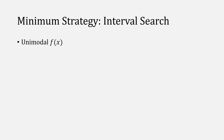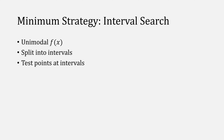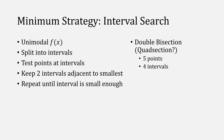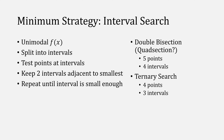We need to assume that f is unimodal and that we'll split it into intervals, then test the intervals at different points. Afterwards, we'll keep the two intervals adjacent to whichever point was our smallest, then repeat the process until our intervals become small enough. You might try this double bisection approach that uses five points and four intervals, or the namesake of this video — ternary search — which is simpler in terms of programming and also in terms of function calls and evaluation test points.